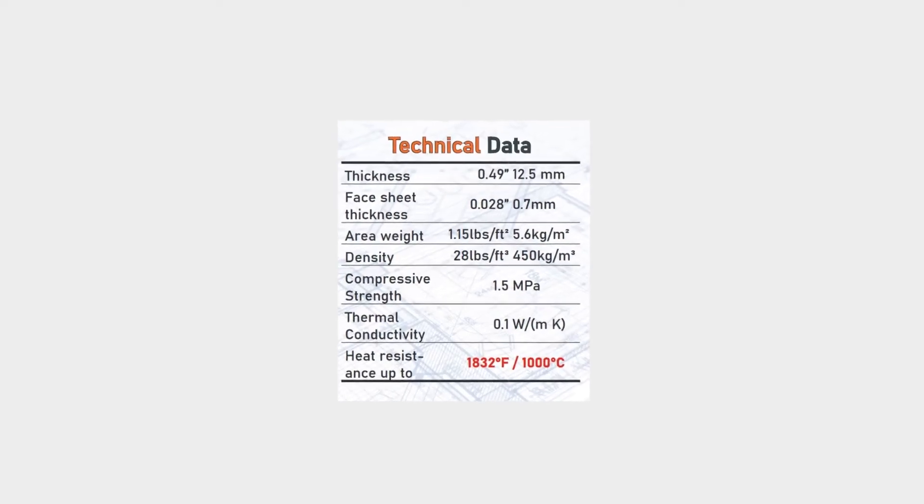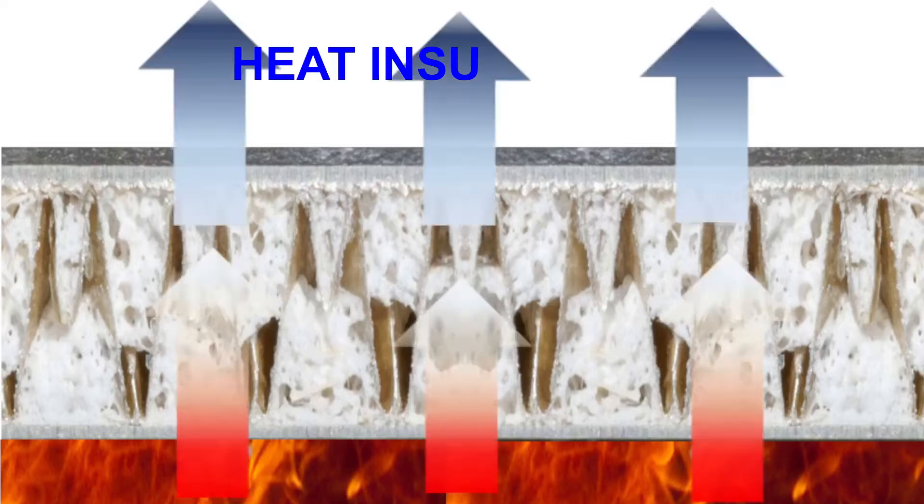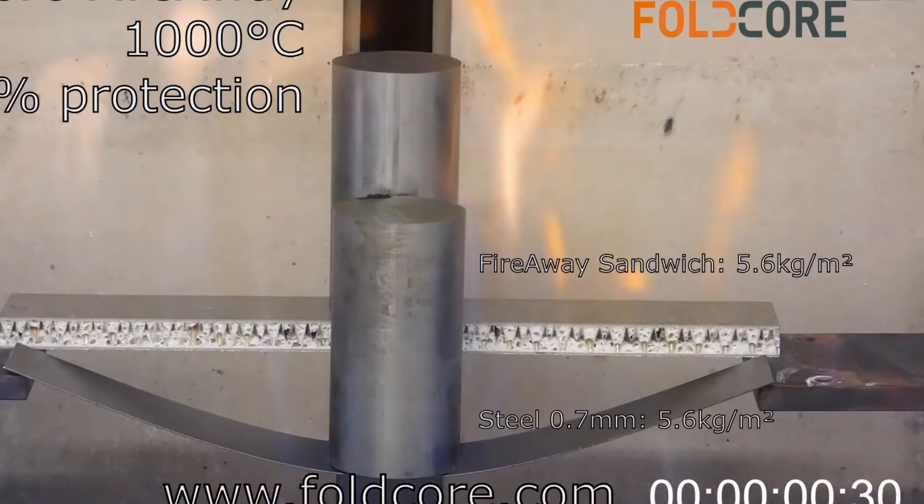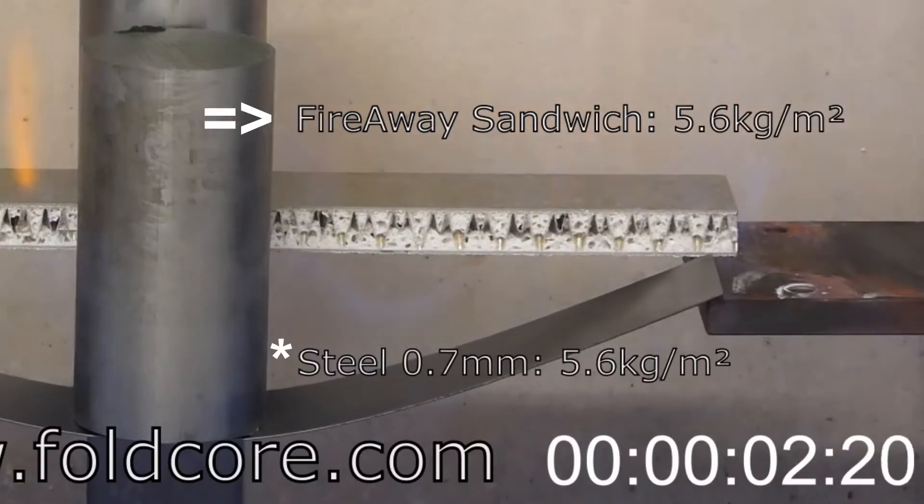The properties of FireAway provides good thermal insulation as compared with Mica sheet alone. It is relatively lighter and mechanically a lot stronger than current Mica solutions available.